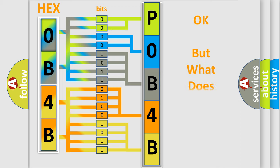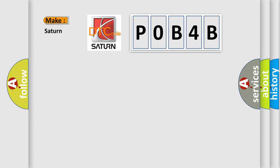The number itself does not make sense to us if we cannot assign information about what it actually expresses. So, what does the diagnostic trouble code P0B4B interpret specifically for Saturn car manufacturers?